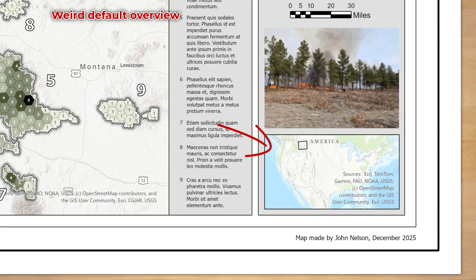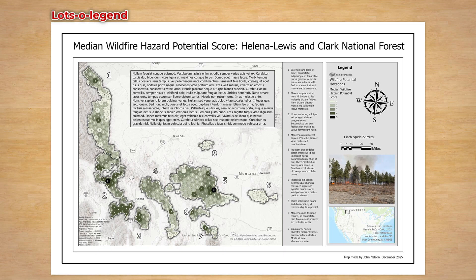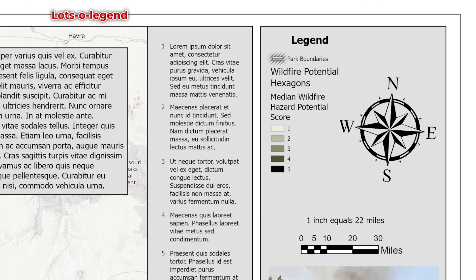This overview map provides useful context for where this park is located in the United States, but everything about it screams default. It's just using a vector base map — we don't have any control over the placement or existence of labels, so we just get an awkward America. It's a missed chance at making something crispy and simple and cool.